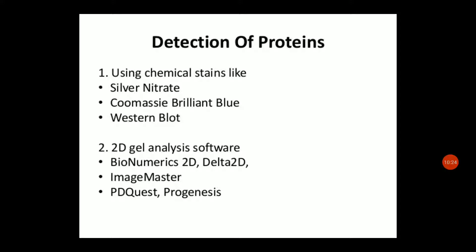Proteins separated on the gel can be visualized using staining chemicals such as silver nitrate, Coomassie, Brilliant Blue, and others.